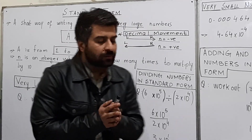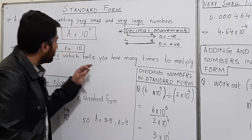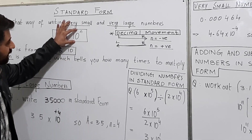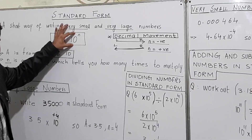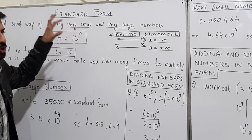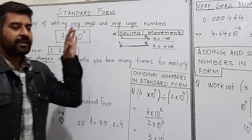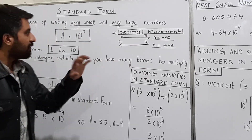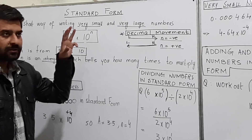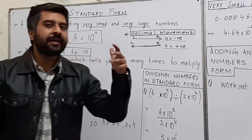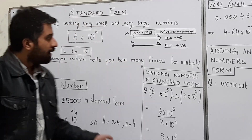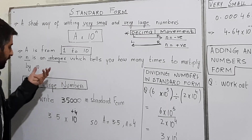If n is 2, then 10 to the power 2 means you will multiply 10 two times. If n is 3 then you will be multiplying 10 three times.